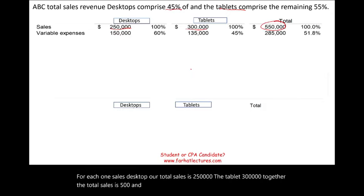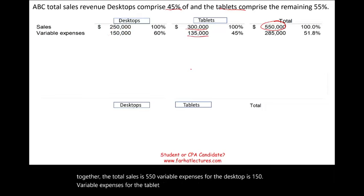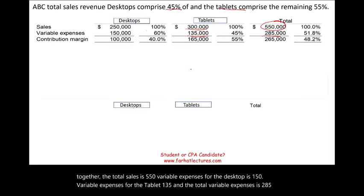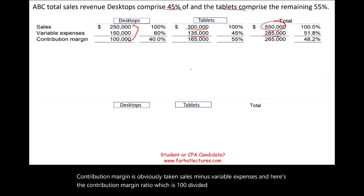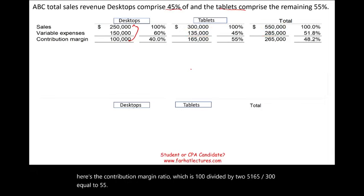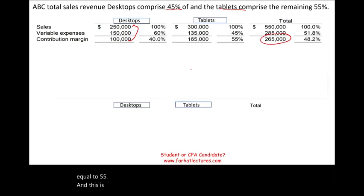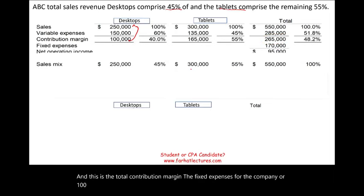Variable expenses for the desktop are 150,000 and for the tablet 135,000, making total variable expenses 285,000. Contribution margin is sales minus variable expenses. The contribution margin ratio is 100 divided by 250 for the desktop and 165 divided by 300, equal to 55%, for the tablet. Fixed expenses for the company are 150,000 and net operating income is 95,000, which is the total contribution margin minus fixed expenses.